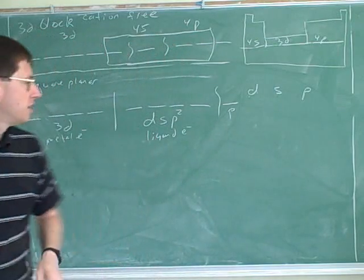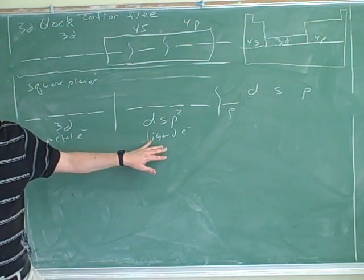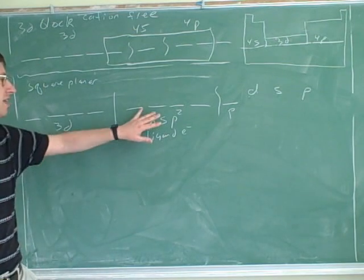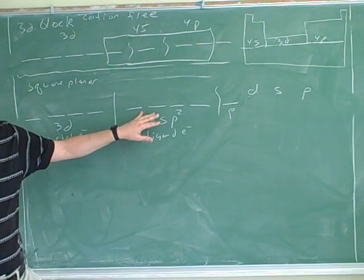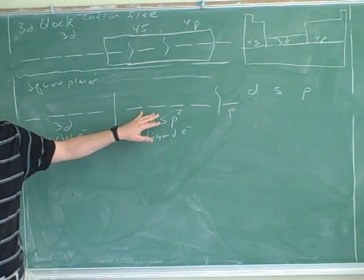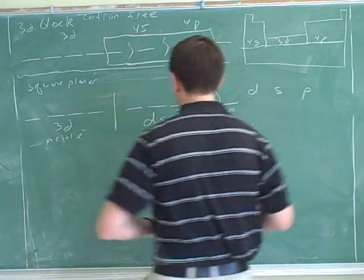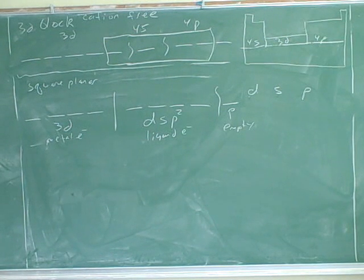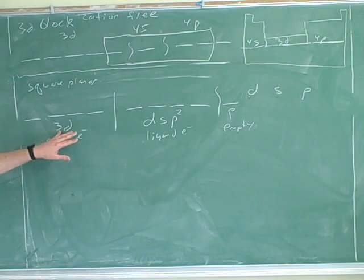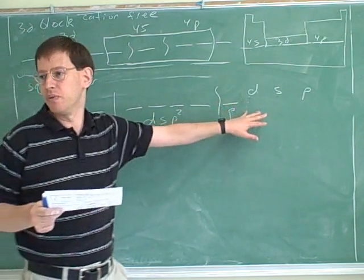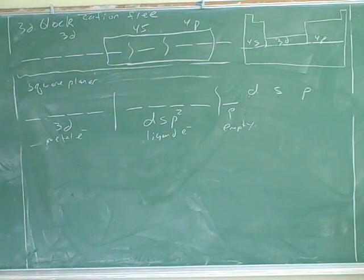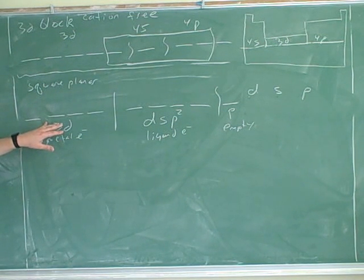The ligand electrons are going to use the hybrid orbitals for the covalent bonds with the ligands. The p block is higher in energy than the d block, so we're probably not going to have enough lone pairs to get all the way up there — so this will be empty. We can fit a maximum of eight electrons in here, and that's the square planar model.